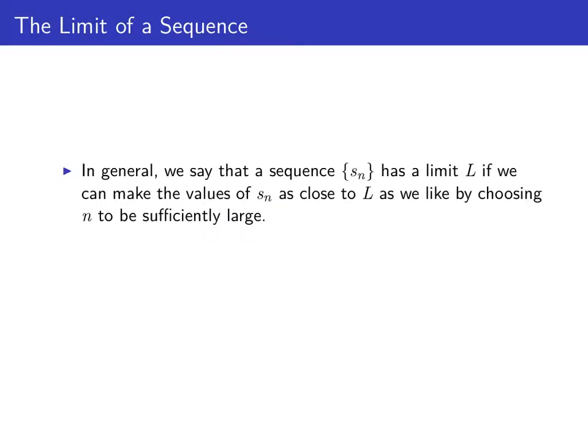We can do this for any sequence. We'll say that a sequence s sub n has a limit of some number L, if we can make all the values of s sub n as close to L as we like, by choosing n to be large enough. When this happens, we write limit of s sub n, as n goes to infinity, is equal to L. And we also say that the sequence s sub n converges to L.